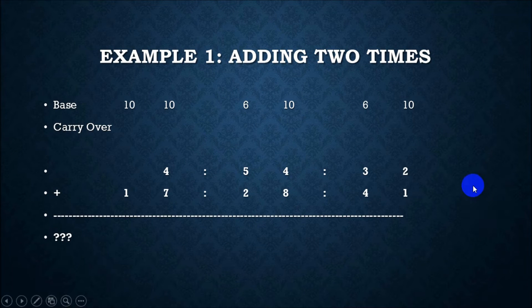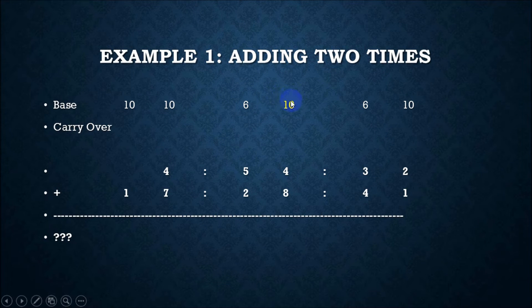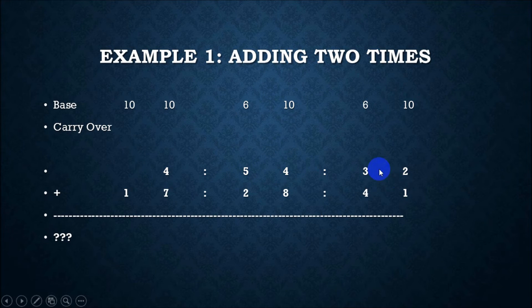We're going to do two addition and two subtraction problems. It's very important when calculating to be neat in your writing and line up the columns. Note that the tens of seconds and the tens of minutes are in base 6, while the ones digit of minutes and seconds is base 10. We're going to add 4 hours, 54 minutes, 32 seconds to 17 hours, 28 minutes, and 41 seconds.